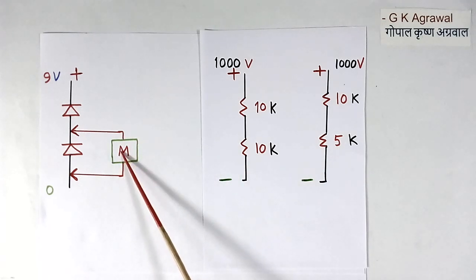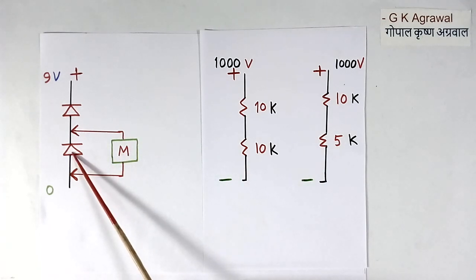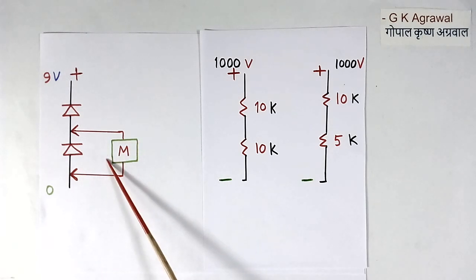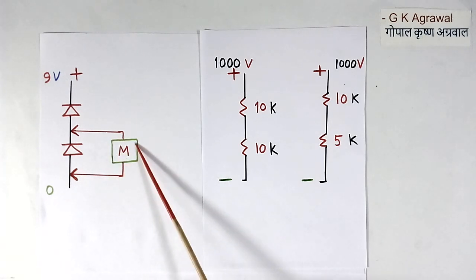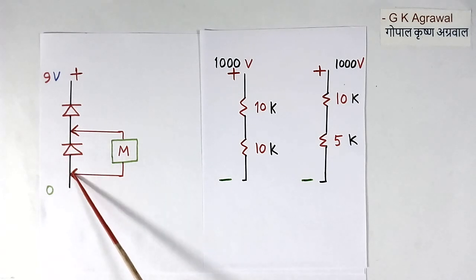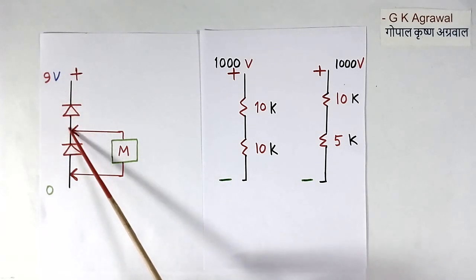Here when we connect a multimeter across the diode, then because of the impedance or resistance of this multimeter, resistance across this come down compared to this. I will explain you in detail.